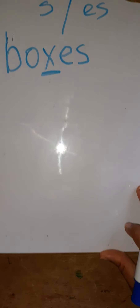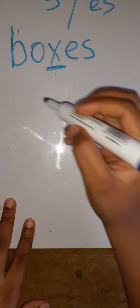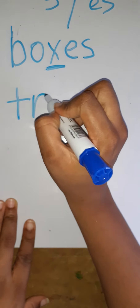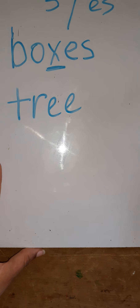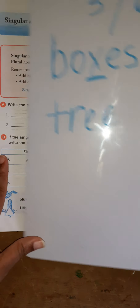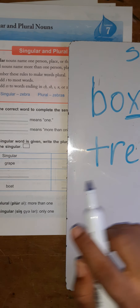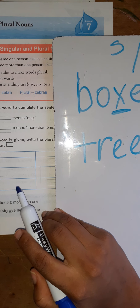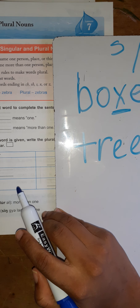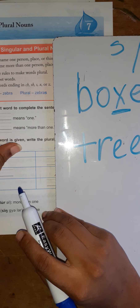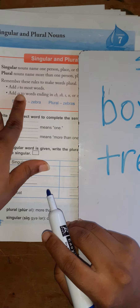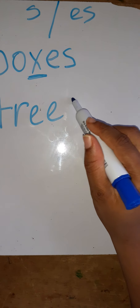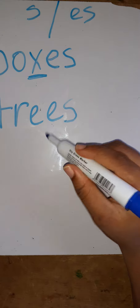What about the word tree? Does tree end in CH, SH, X, or Z? No. So all you need to do is add S to the word tree, and tree becomes trees.